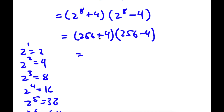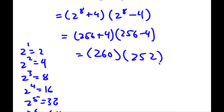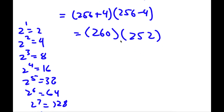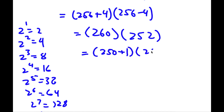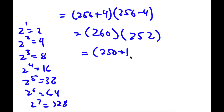Now 256 plus 4 is 260, times 256 minus 4 which is 252. So now I have 260 times 252. I'm going to rewrite 260 as 250 plus 10, and 252 as 250 plus 2.